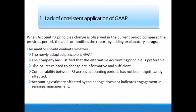The first condition under which an explanatory paragraph is added is lack of consistent application of GAAP. GAAP requires that a change in accounting principle lead to a preferable principle and that the nature and impact of such change be properly disclosed in the financial statements. The auditor must verify that the newly adopted principle is preferable, disclosures related to the change are sufficient, comparability between financial statements hasn't been significantly affected, and the accounting estimate affected by the change doesn't indicate management engagement in earnings manipulation.